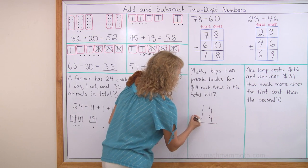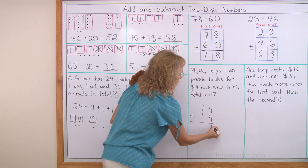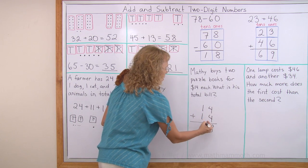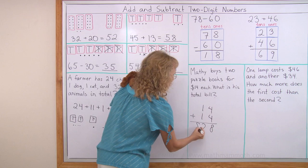And then I draw a line and put plus. Now I add here in the ones. Four plus four. And here in the tens. One plus one. Two. Two tens eight. 28. His total bill is $28.